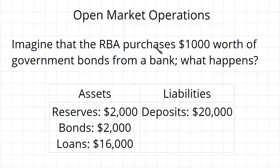If the RBA then comes along and purchases $1,000 worth of those bonds, the RBA takes $1,000 worth of bonds from the bank and in exchange it credits their exchange settlement account for $1,000. What this does is increase their reserves by $1,000 in exchange for taking $1,000 of those bonds.